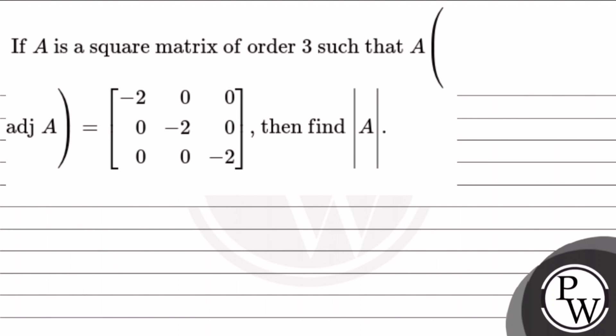Hello guys, let's see today's question. The question says if A is a square matrix of order 3 such that A into adjoint of A is equal to the matrix [-2, 0, 0; 0, -2, 0; 0, 0, -2], then find the determinant of A.